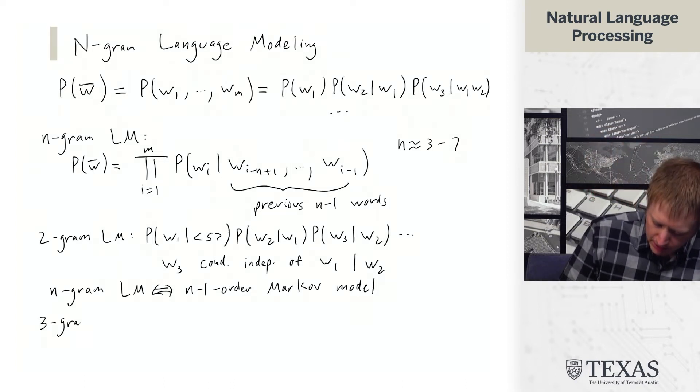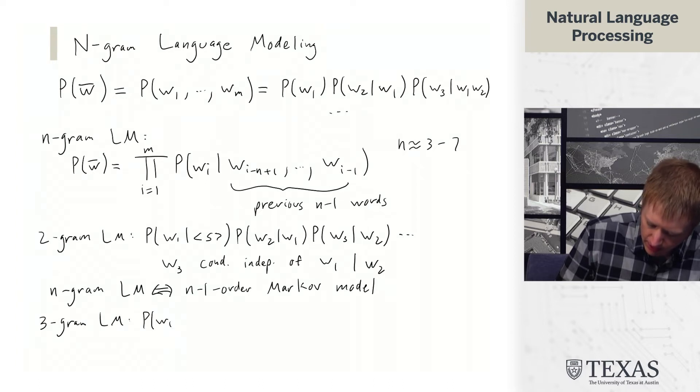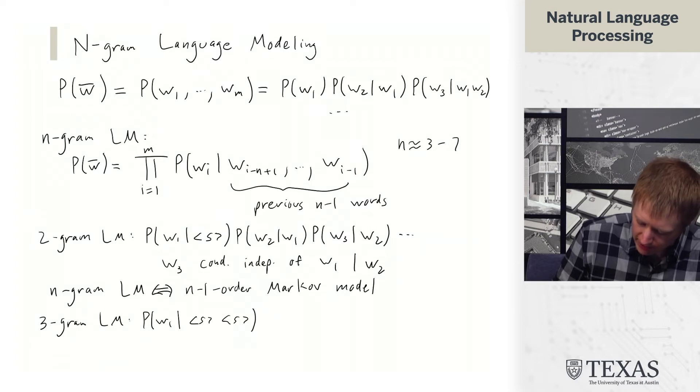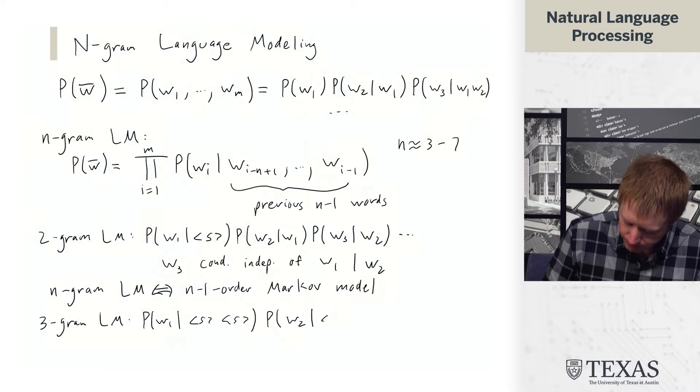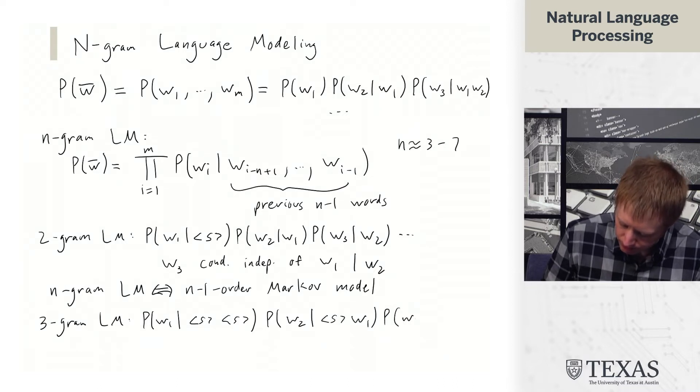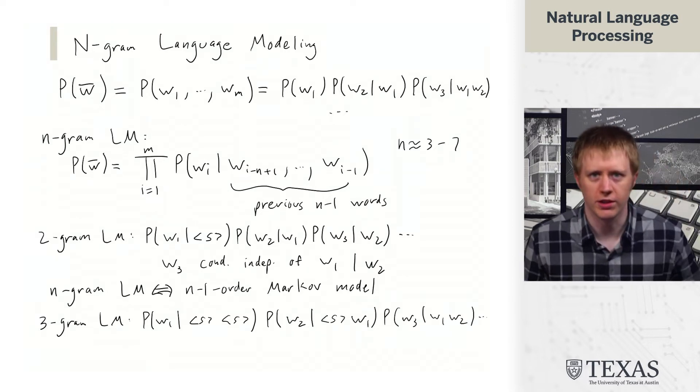And so then a 3-gram language model, just to make it completely explicit, we're now going to have 2 start of sentence tokens. And so on and so forth.